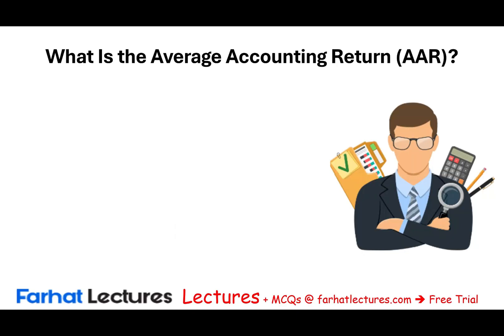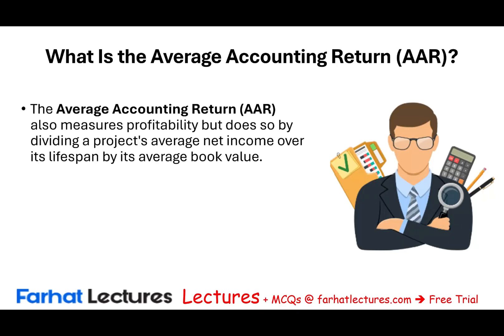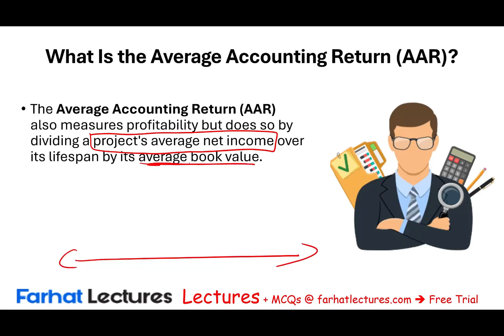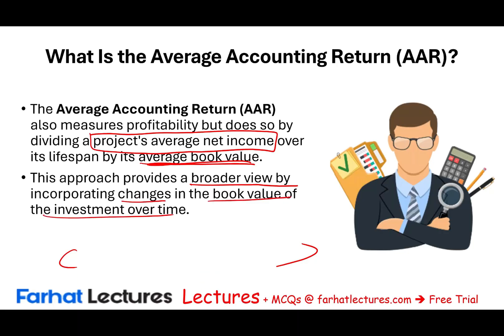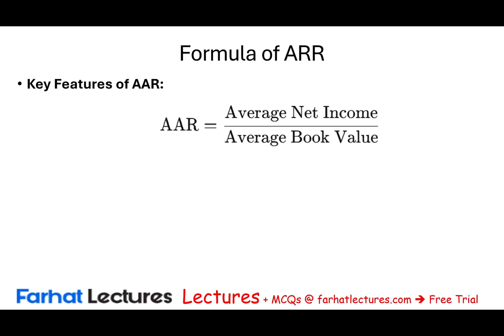What is the average accounting return, or AAR? The average accounting return also measures profitability, but it does so by dividing the project's average net income over its entire life by the average book value of the asset used. This approach provides a broader view by incorporating changes in the book value of the investment over time. The formula is: average net income divided by average book value.